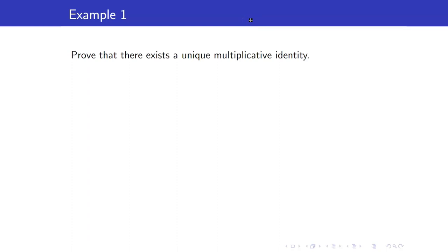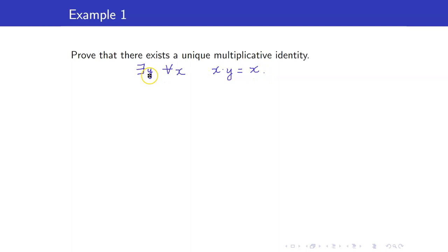First, let us prove that there exists a unique multiplicative identity. As I have reiterated in our previous lecture, it is very important to write what you're trying to prove using symbols so that you can see your quantifiers. In symbols, this means there exists a unique y such that for all x in the set of real numbers, x times y equals x. That is the meaning of multiplicative identity — if you multiply any number by that identity, you get the original number. And note that y does not depend on x. So for our proof, it will be divided into two parts — the first is the existence part.